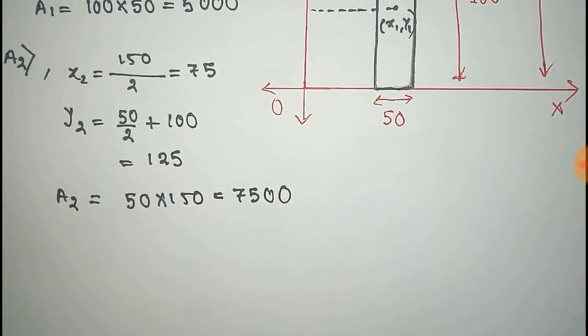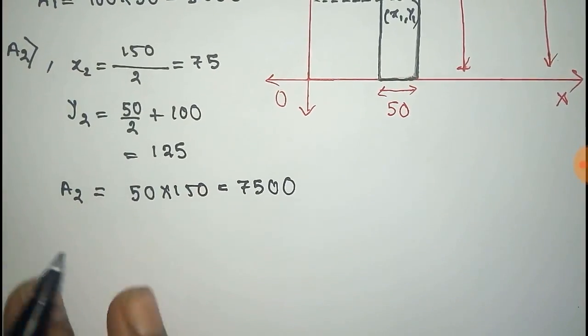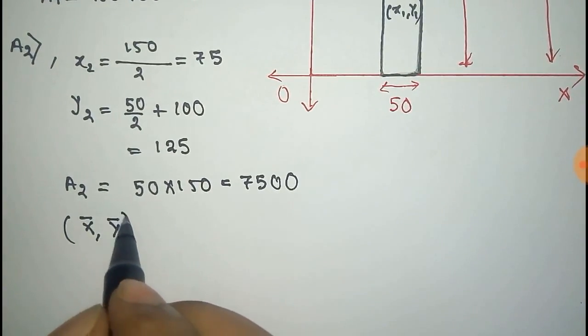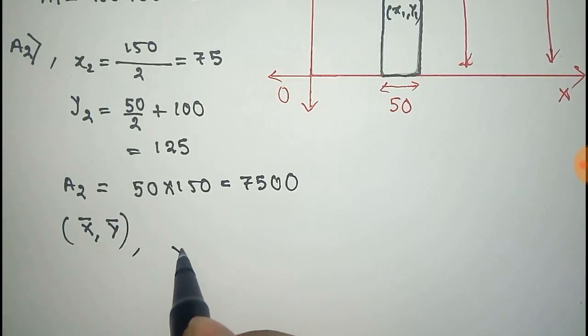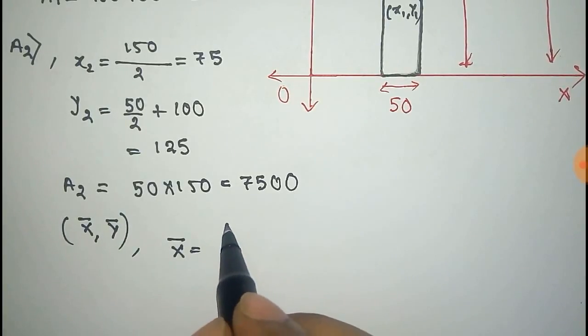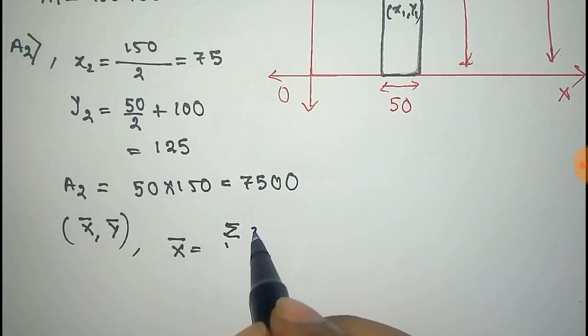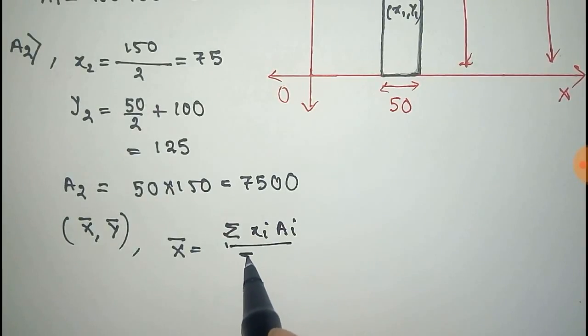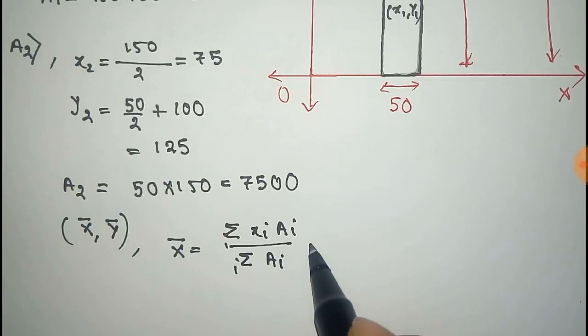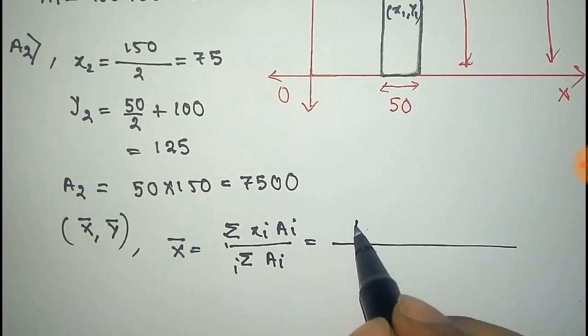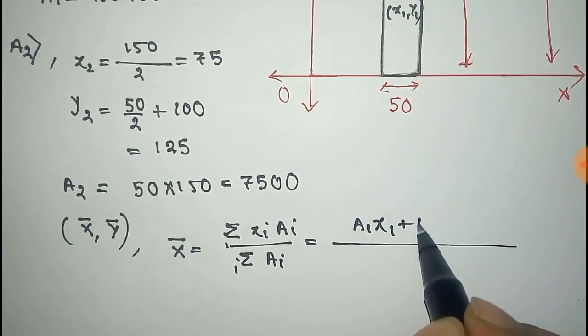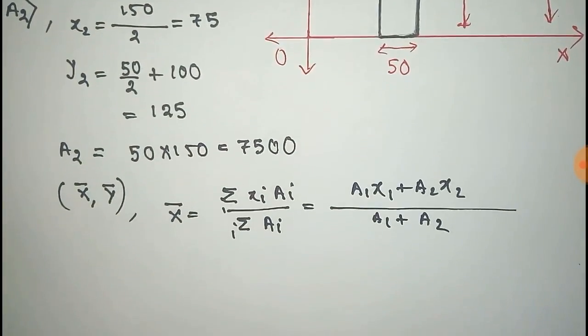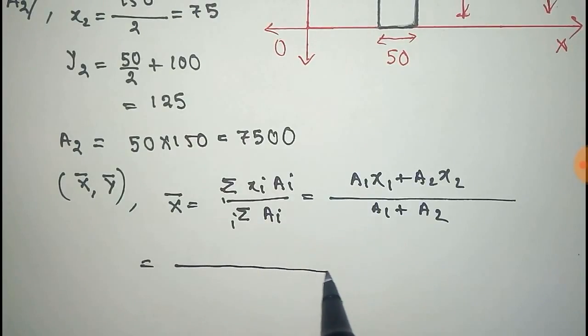Now we can easily find out the centroid. We take the centroid location as (x-bar, y-bar). So x-bar is given by sum over i of xi times Ai divided by sum over Ai, which equals (A1 times x1 plus A2 times x2) divided by (A1 plus A2).